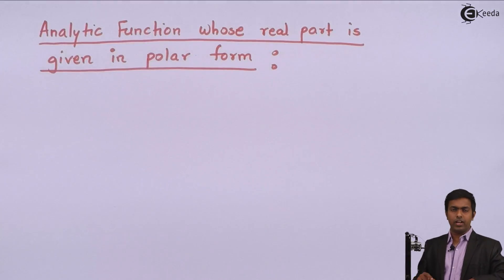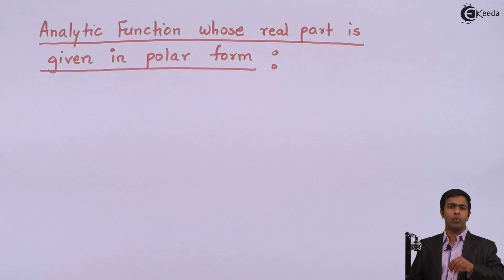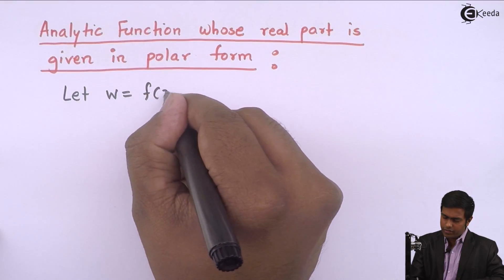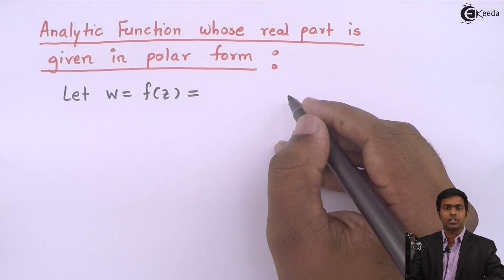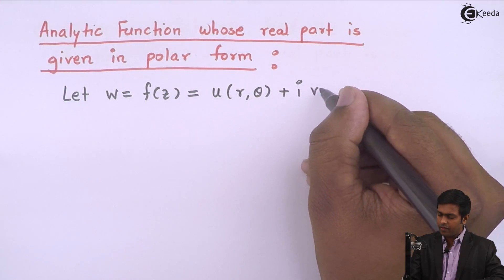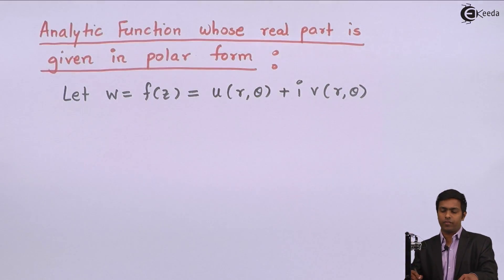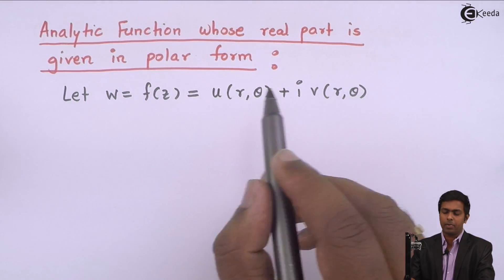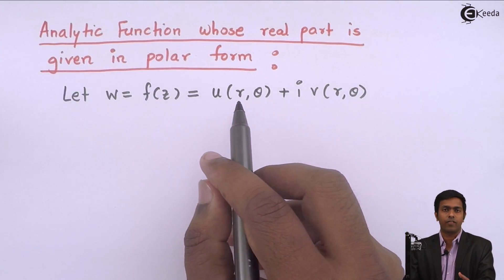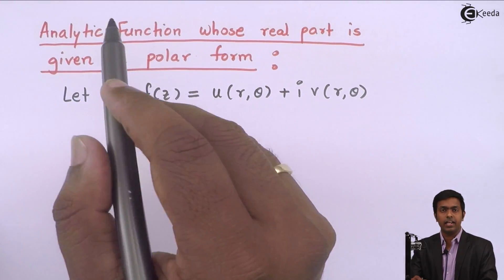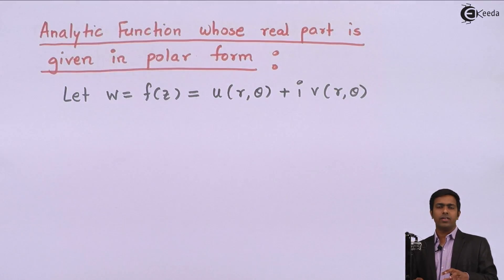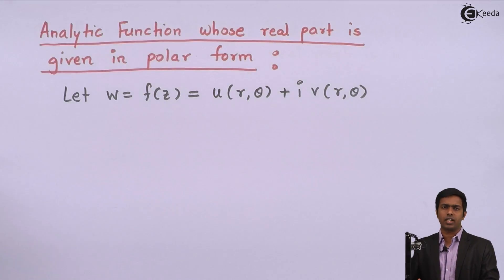We will assume one analytic function in polar form. Let W = f(z) be an analytic function given by U + iV, where U is the real part and V is the imaginary part in terms of R and theta, that is in polar form. Now to get the analytic function f(z) when only U is given but V is not given, we are going to follow certain steps.